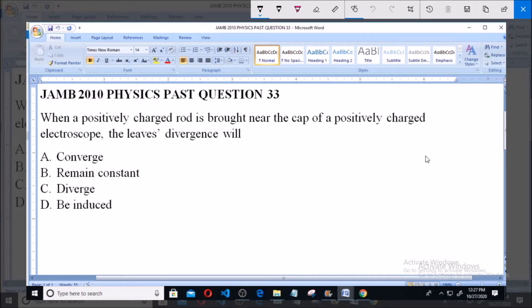When a positively charged rod is brought near the cap of a positively charged electroscope, the leaves' divergence will: A. Converge, B. Remain constant, C. Diverge, D. Be induced.